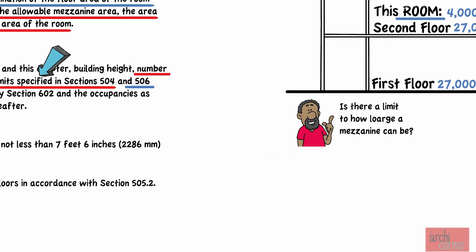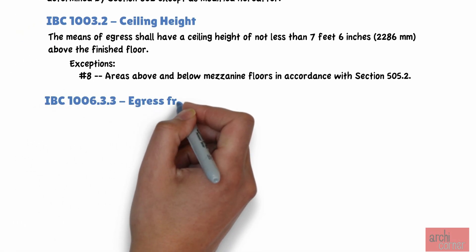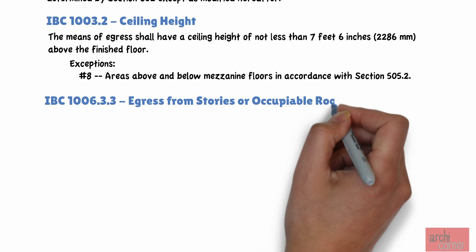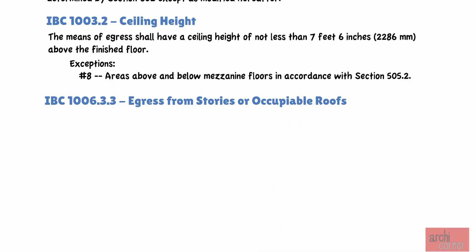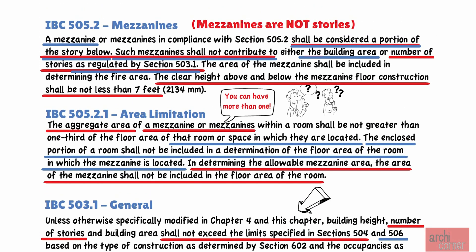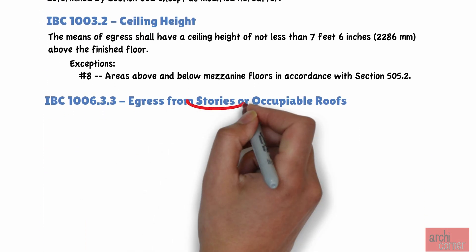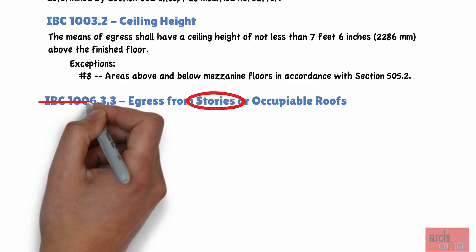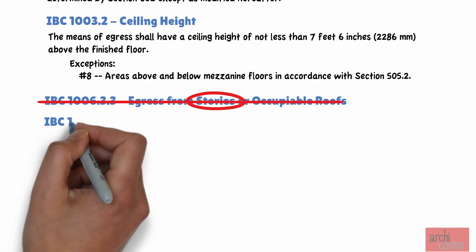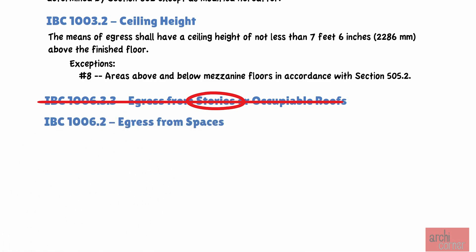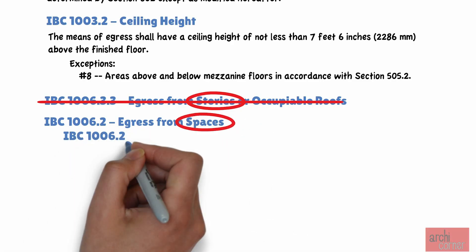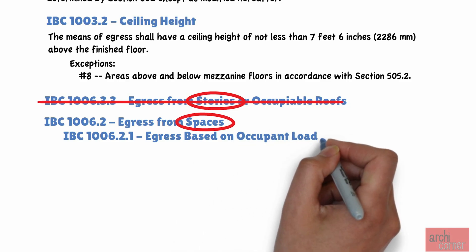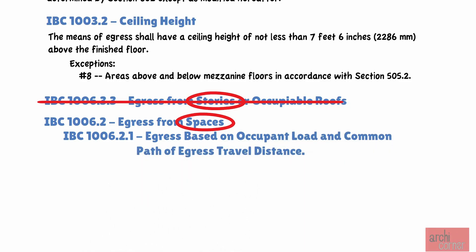Now that we have covered height requirements, let's talk about the number of exits required for a mezzanine. Normally, the number of exits for a story are based on IBC section 1006.3.3. But remember, per IBC 505.2, a mezzanine is not considered a story. It is a portion of the story below. Therefore, we need to instead look at it as a space within a story. That is why the number of exits required for mezzanines are based on IBC section 1006.2 titled, Egress from Spaces. More specifically, IBC section 1006.2.1, which is titled, Egress based on Occupant Load and Common Path of Egress Travel Distance.